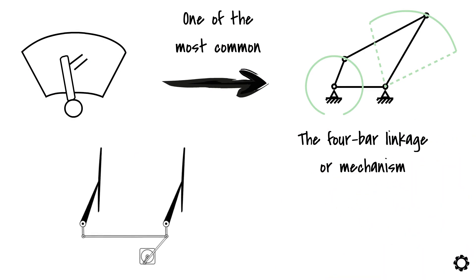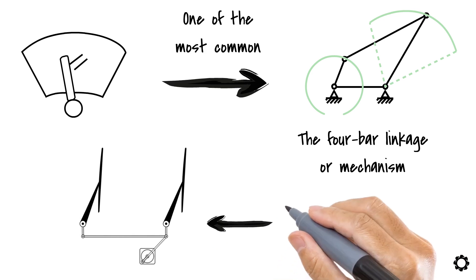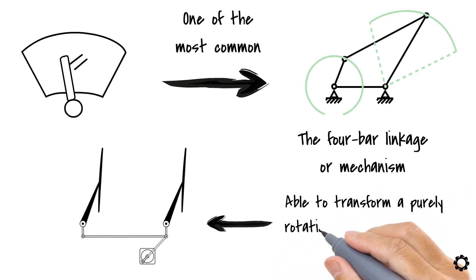Hidden in the car hood, we find a 4-bar mechanism actioned by an electrical motor. The primary purpose of this mechanism or why it is widely used is because it is able to transform a purely rotational movement into a different type of movement.